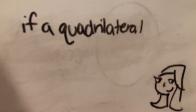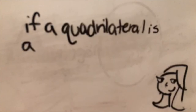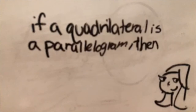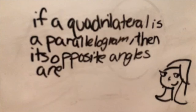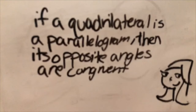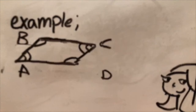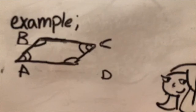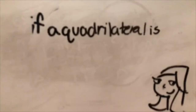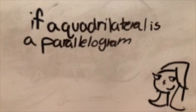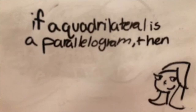If a quadrilateral is a parallelogram, then its opposite angles are congruent. So in parallelogram ABCD, angles B and D are congruent, and angles A and C are congruent.